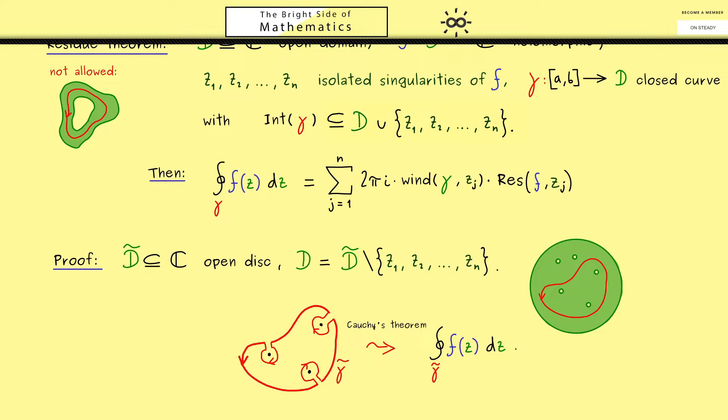So you see the original integral can be calculated by three integrals as circles around the singularities. So you see for some special domains and some special curves the proof of the residue theorem is not hard at all.